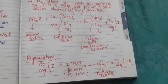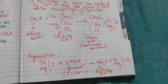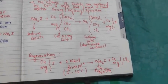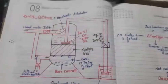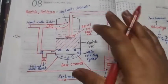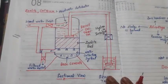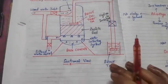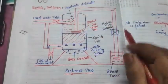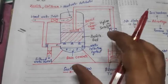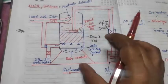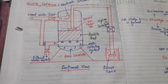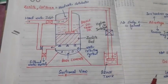A special equipment called the zeolite softener is used for this process. The zeolite softener, also called a cation exchange unit, is shown here as a sectional view. This is a pressure-type zeolite softener, meaning water enters under pressure. Two types exist: gravity type and pressure type.